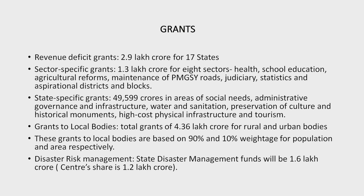State-specific grants of Rs. 49,599 crore will be given in the areas of social needs, administrative governance and infrastructure, water and sanitation, preservation of culture and historical monuments, high-cost physical infrastructure, and tourism. The Commission recommended a high-level committee at the state level to review and monitor the utilization of state-specific and sector-specific grants.